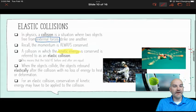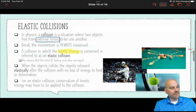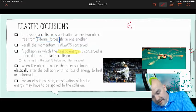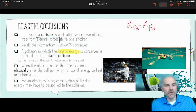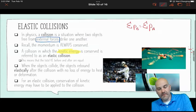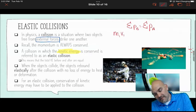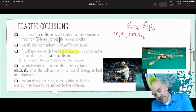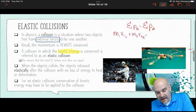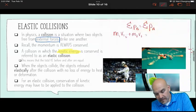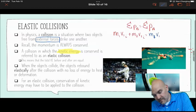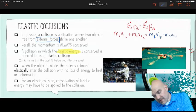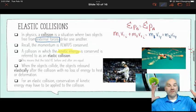So for an elastic collision, conservation of kinetic energy may have to be applied to the collision. And so here's our statement for conservation of momentum. So the total momentum before equals the total momentum after, and total momentum is momentum of object one plus object two before the collision. Oh, I put in B. I've been using I's for initial, not B's for before, and that has to equal the after. So the momentum of one after plus the momentum of two after.